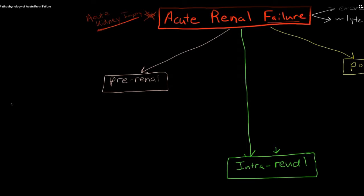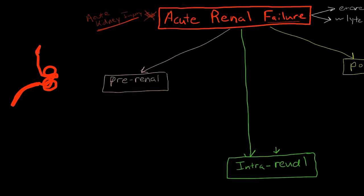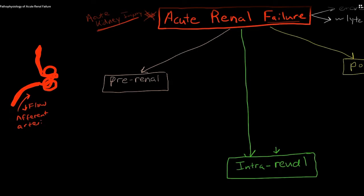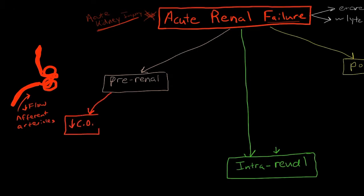Pre-renal failure refers to renal failure that is due to disruptions in flow to the glomerulus. If we have decreased flow to the glomerulus, this can interfere with the nephron's ability to perform its functions — specifically, decreased flow through the afferent arterioles. Several things can cause this. Chief among them is decreased cardiac output. We could have decreased cardiac output because we have a patient with hypotension, or because we have a patient with congestive heart failure.